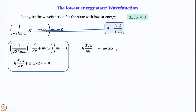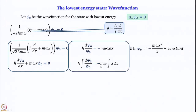The next step is to integrate both sides: ℏ ∫dψ₀/ψ₀ = −mω ∫x dx. The left side gives ℏ · ln(ψ₀), and the right side gives −mω · x²/2, plus a constant of integration.